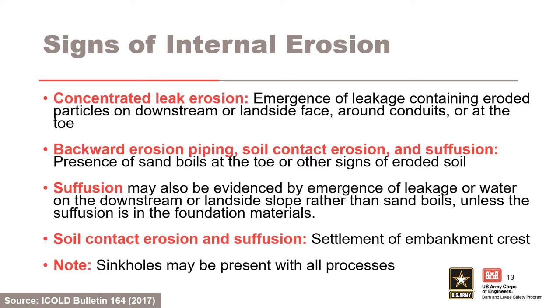Important factors to keep in mind when evaluating the likelihood of detection of an internal erosion process: internal erosion incidents have typically been discovered by visual observation, sometimes by the public. For concentrated leak erosion, the emergence of leakage containing eroded particles can occur on the downstream or landside face, around conduits, or at the downstream toe. For backward erosion piping, soil contact erosion, and suffusion, sand boils can occur at the downstream toe, or there may be other signs of eroded soil. Suffusion may also be evidenced by emergence of leakage or water on the downstream or landside slope, unless the suffusion is in the foundation materials.